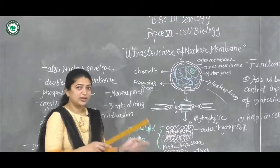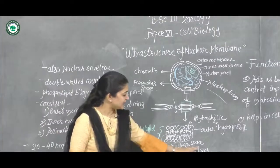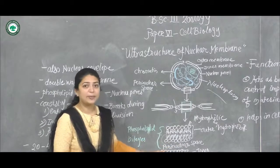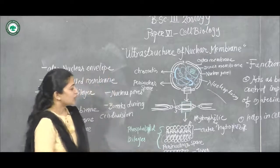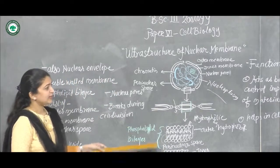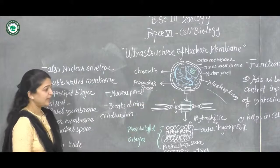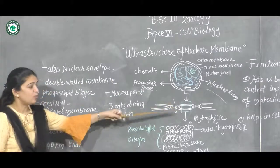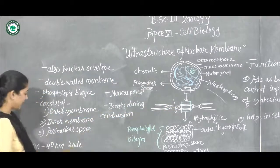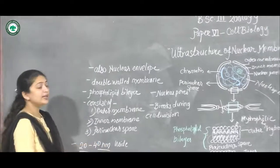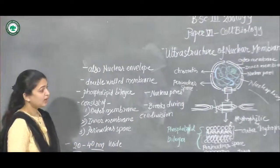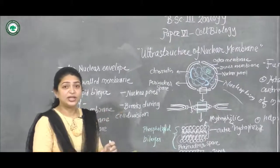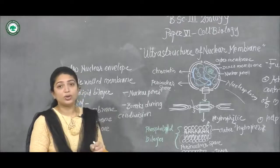The same phospholipid bilayer structure with head-to-tail positioning is also present in the inner membrane. The space between the two membranes is the perinuclear space. The width of this nuclear membrane is 20 to 40 nanometers wide.